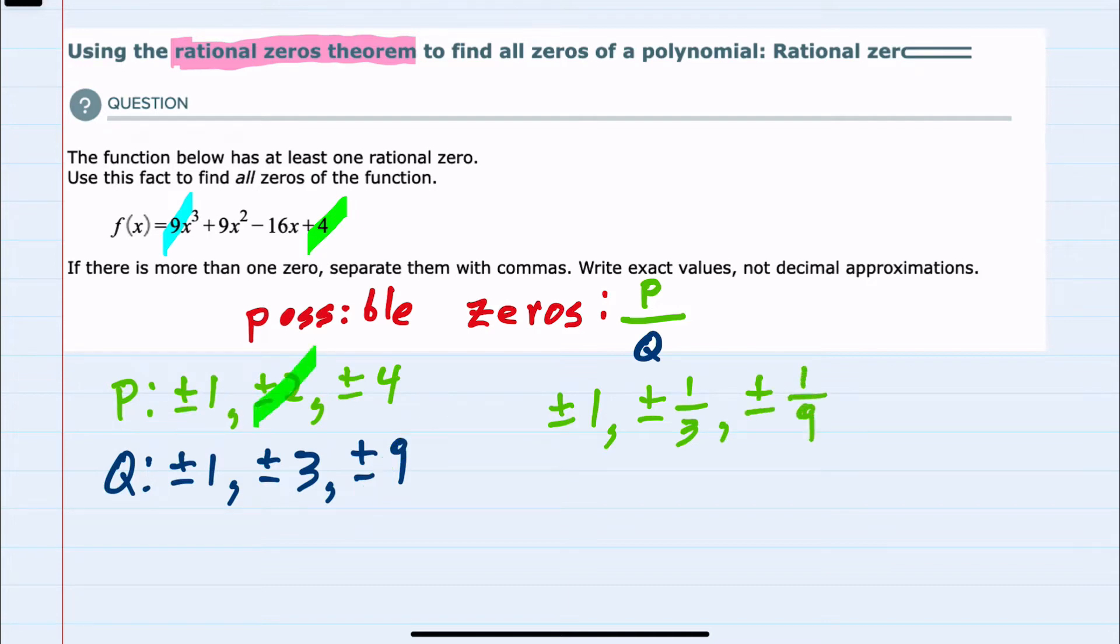Moving to the next p value, we would have plus or minus 2 over 1, or plus or minus 2, plus or minus 2 over 3, which is plus or minus 2 thirds, also plus or minus 2 over 9.